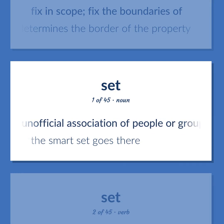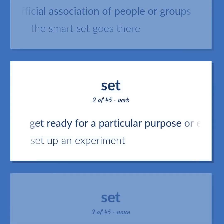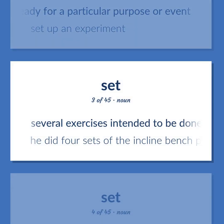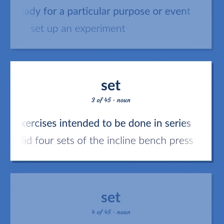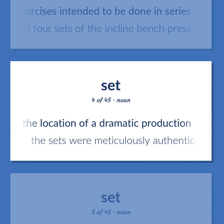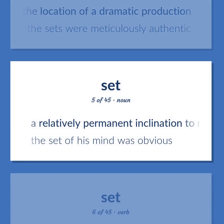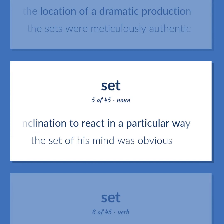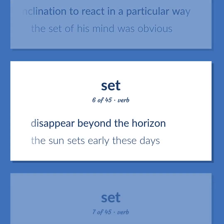Set: An unofficial association of people or groups — 'The smart set goes there.' Get ready for a particular purpose or event — 'Set up an experiment.' Several exercises intended to be done in series — 'He did four sets of the incline bench press.' Representation consisting of the scenery and other properties used to identify the location of a dramatic production — 'The sets were meticulously authentic.' A relatively permanent inclination to react in a particular way — 'The set of his mind was obvious.' Disappear beyond the horizon — 'The sun sets early these days.'